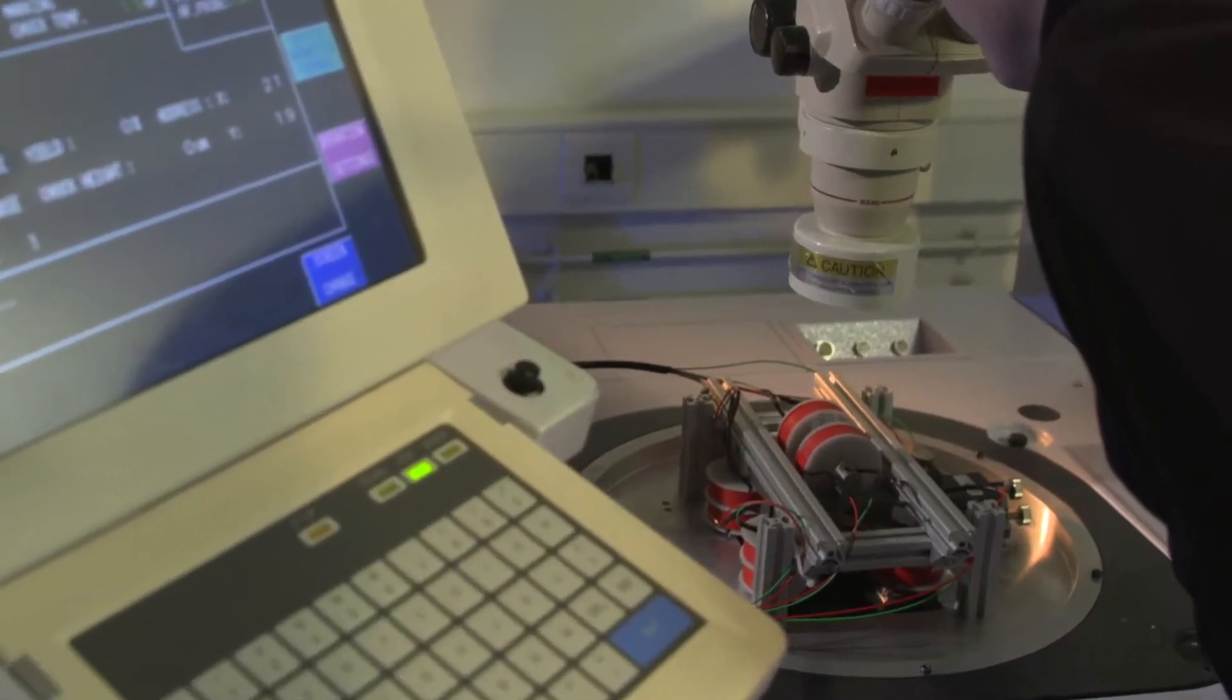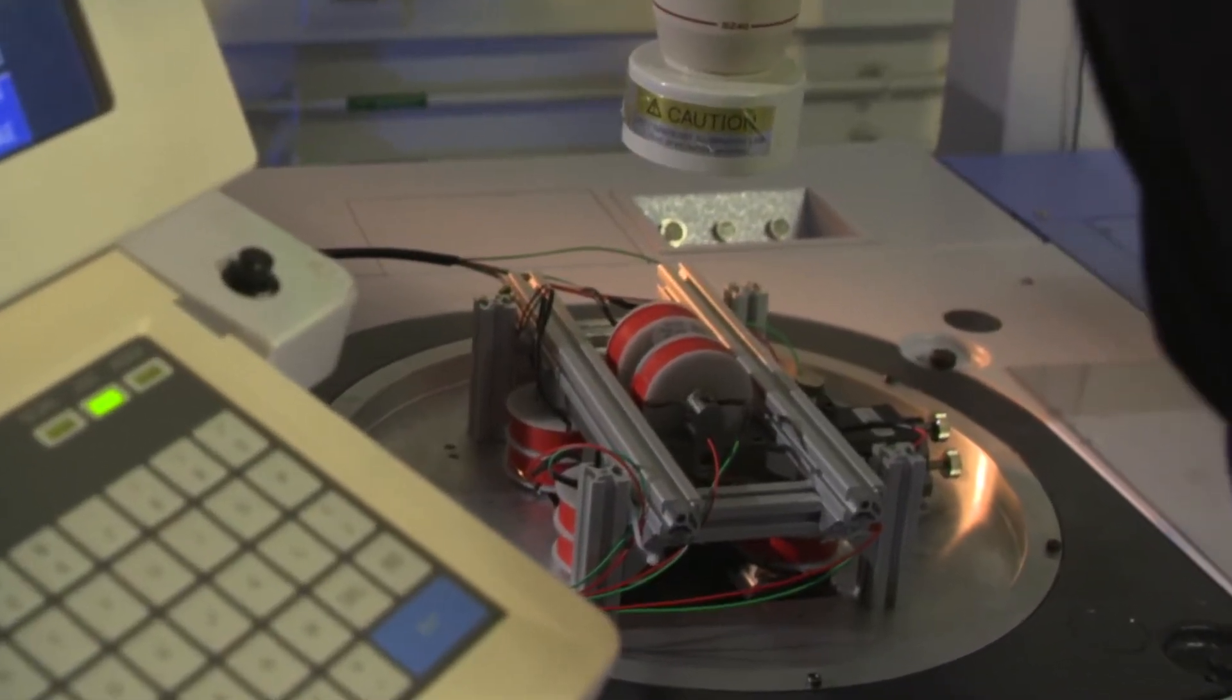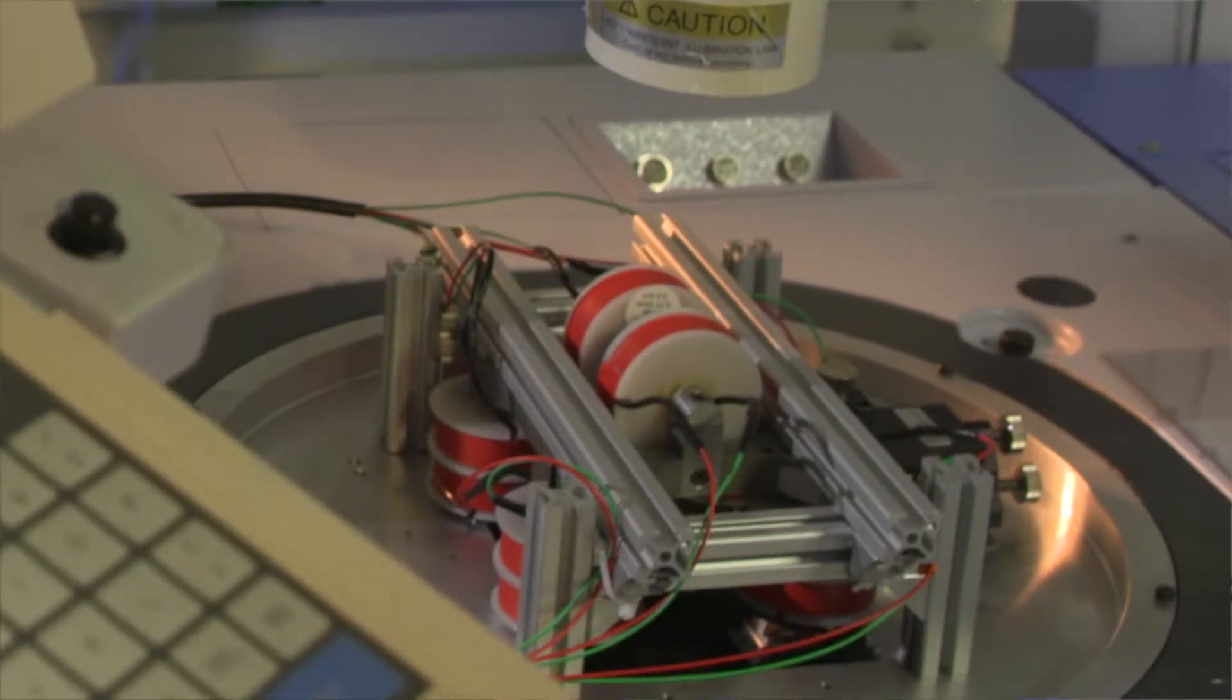The way the tester works is that we are monitoring the resistance of a magnetic tunnel junction while we are sweeping a magnetic field.